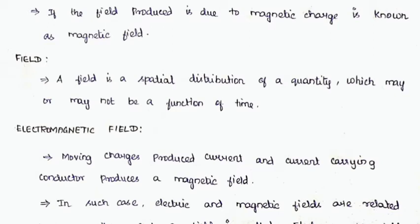Many of you may have the doubt: what is meant by field? A field is a spatial distribution of a quantity which may or may not be a function of time. The field is nothing but the space around the electric charge or magnetic charge which is induced by rest and moving charges.